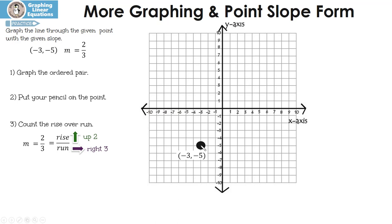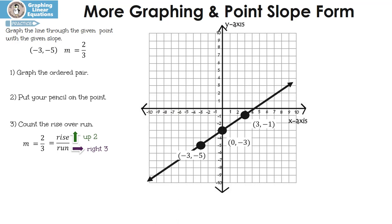So you can see my pencil. We're going to go up two and then run one, two, three — and that's my next point. We're going to go from this point, up two and run one, two, three — and there's my next point. Now all we have to do is draw our line.